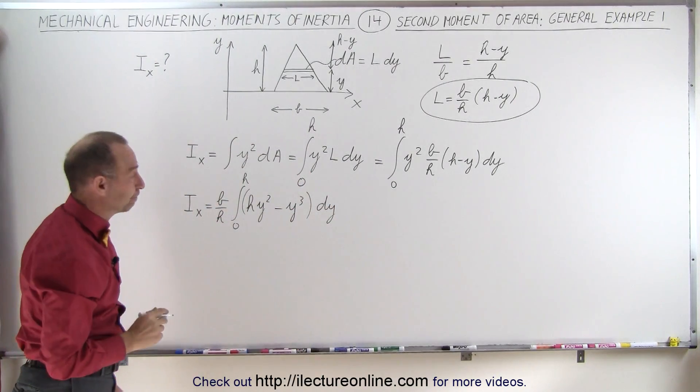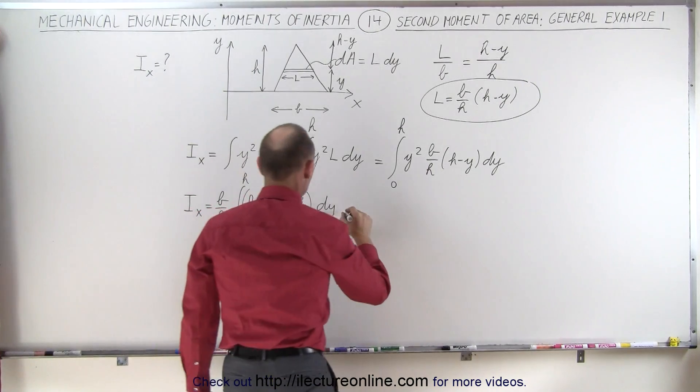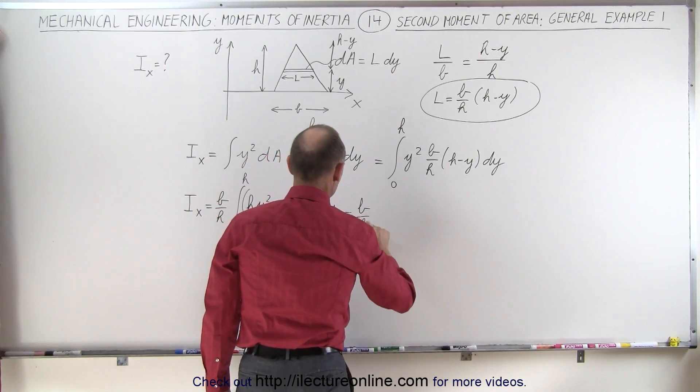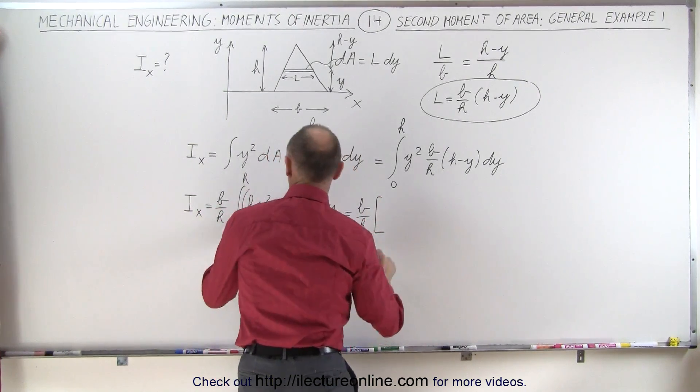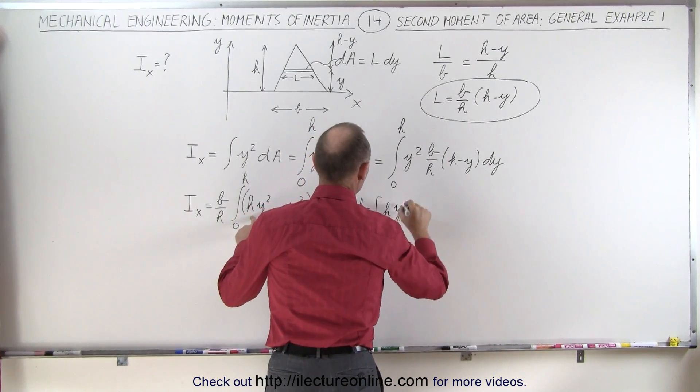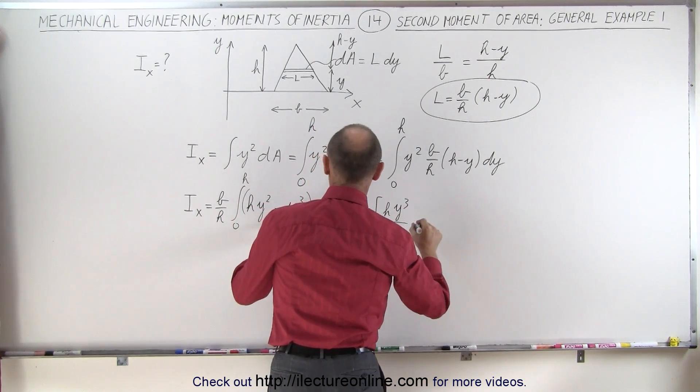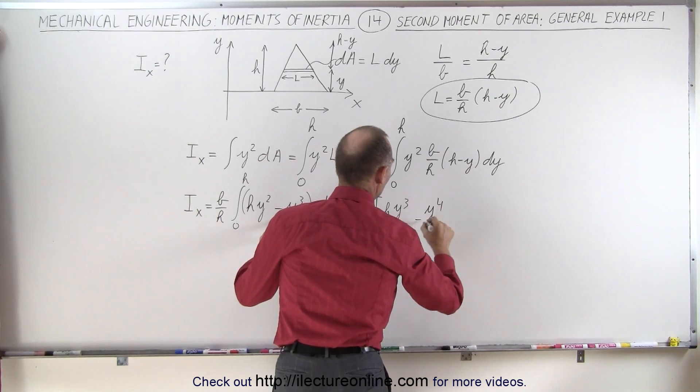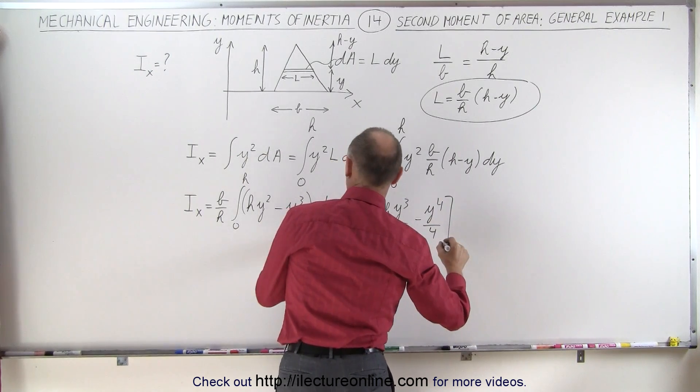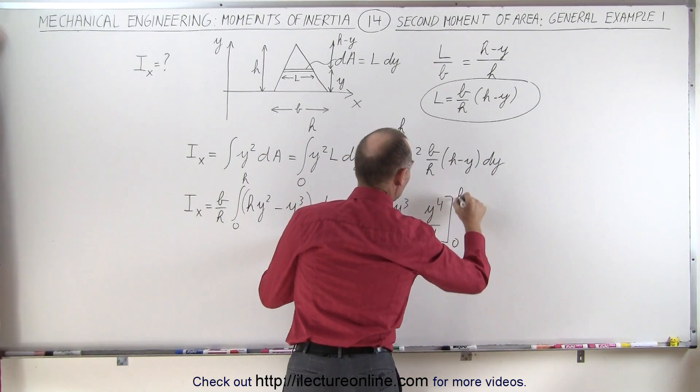Now we're ready to integrate. So now we get, this is equal to b over h times, that would be h y cubed over 3 minus y to the 4th over 4, evaluated from 0 to h.